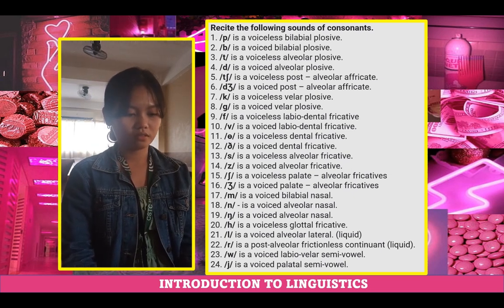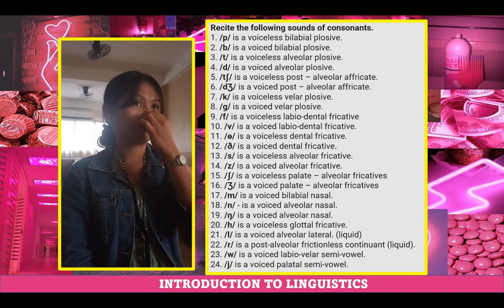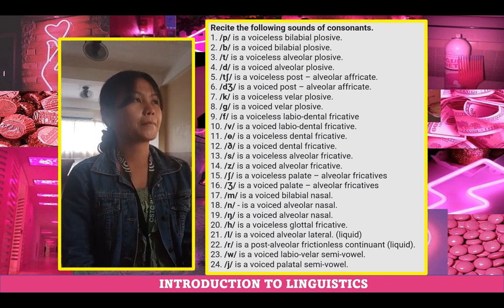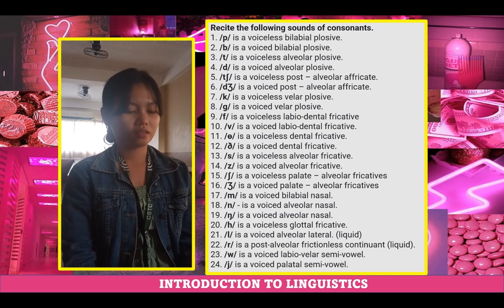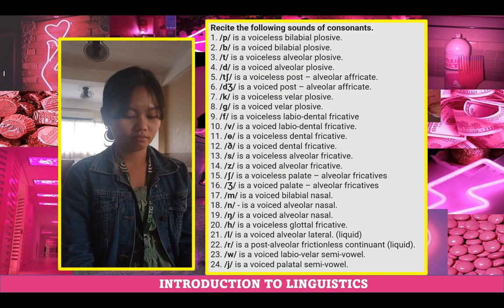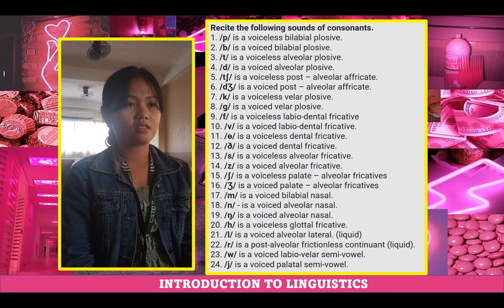Number twelve: voiced dental fricative. How can you draw it on the air? You have the correct sound. It's like a J with a certain shape. Okay, correct. Number thirteen: voiceless alveolar fricative. Correct. Number fourteen: voiced alveolar fricative. Okay, correct.